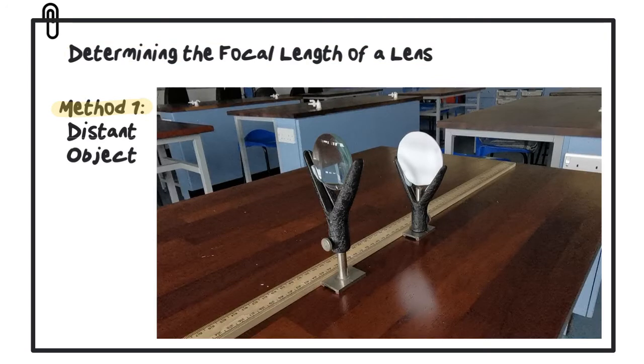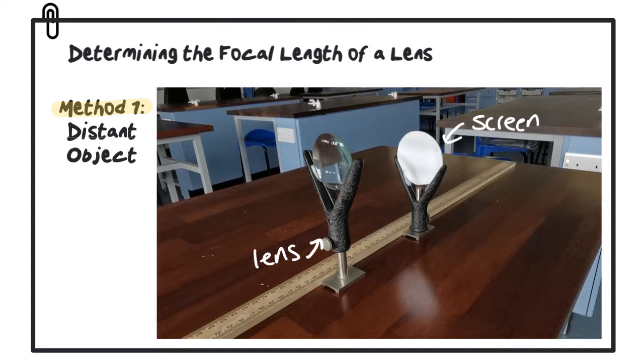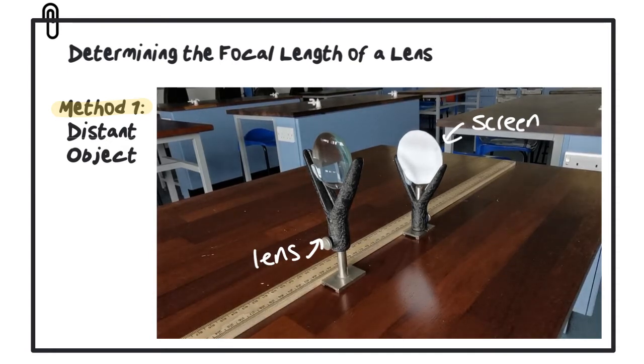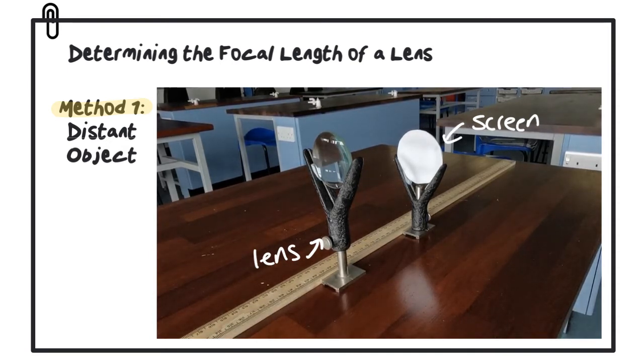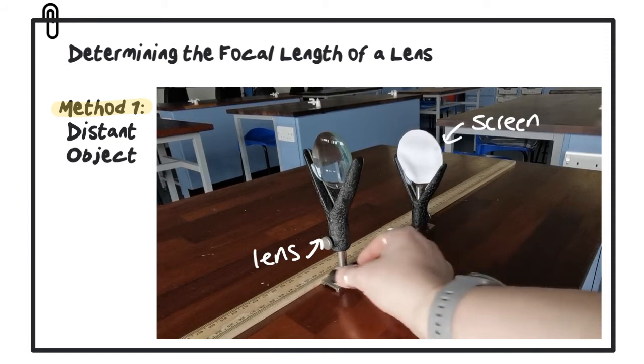The first method is called the distant object method. For this we need a screen, a converging lens, and access to a distant object, usually a window. On a bench in front of the window, place the lens with the screen behind it.